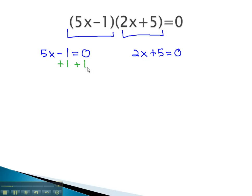The first equation we solve by adding 1, giving us 5x equals 1, and finally dividing by 5. x could be equal to the fraction 1 fifth. When it does, the first factor equals 0, times anything is always 0.